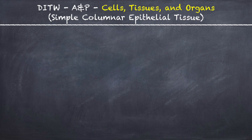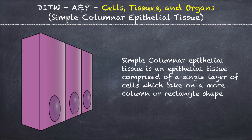This is DITW Anatomy and Physiology and you are watching the video on Simple Columnar Epithelial Tissue. Simple columnar epithelial tissue is an epithelial tissue comprised of a single layer of cells which take on a more column or rectangle shape.